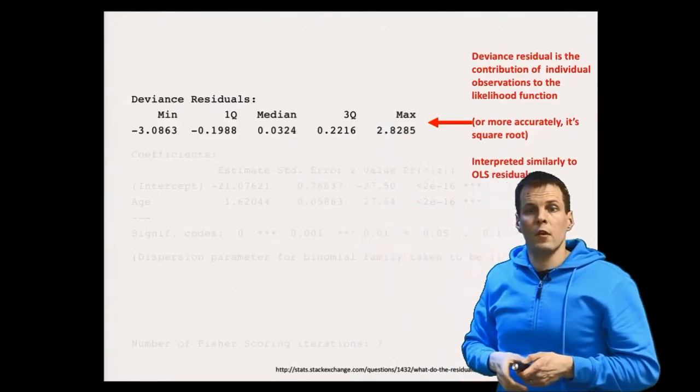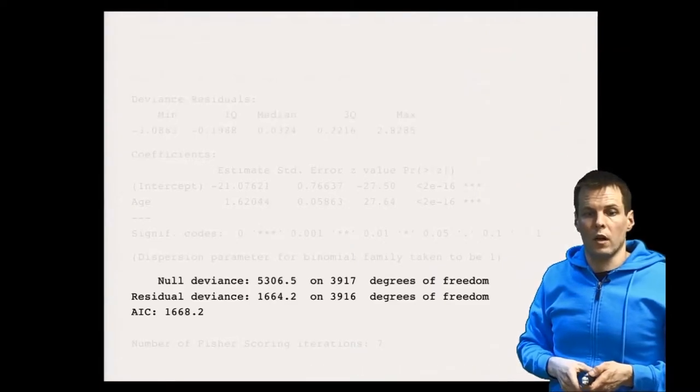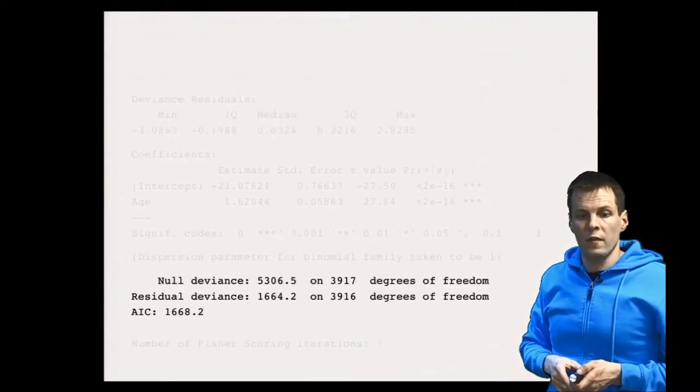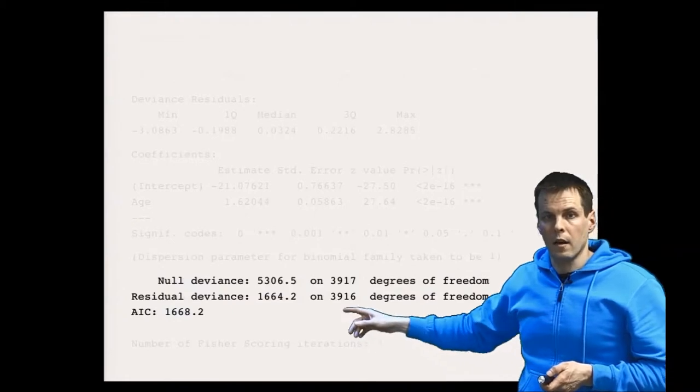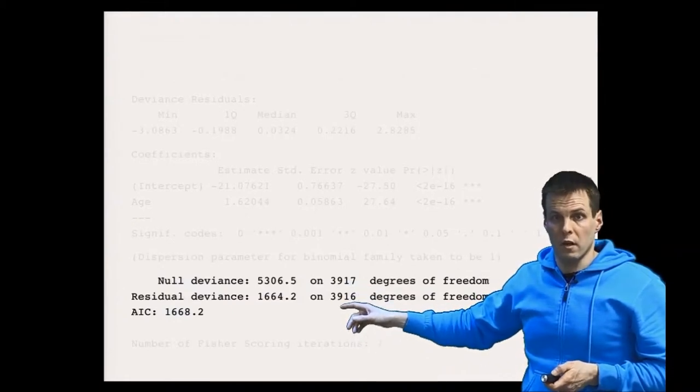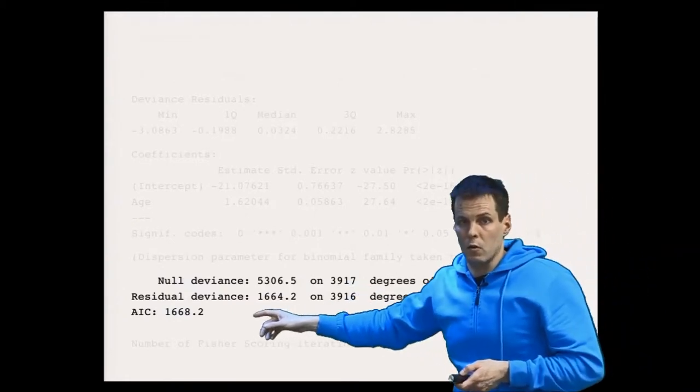Then we have the overall model deviance here in the model quality indices. We have two deviances and the null deviance and the residual deviance, and then we have a statistic called AIC.